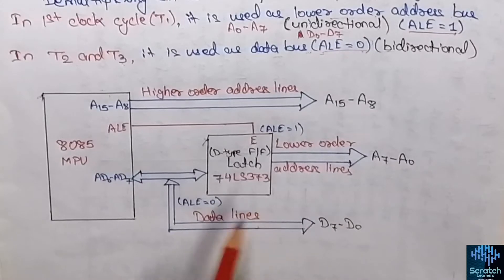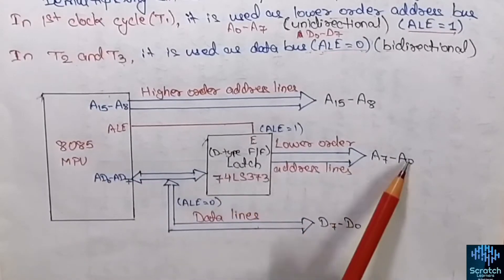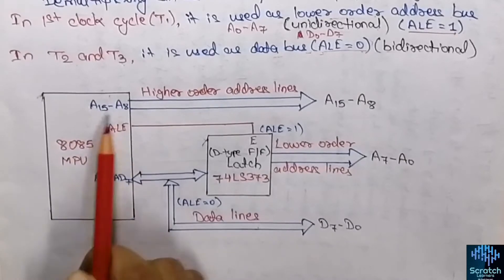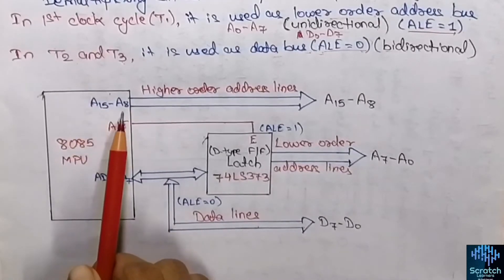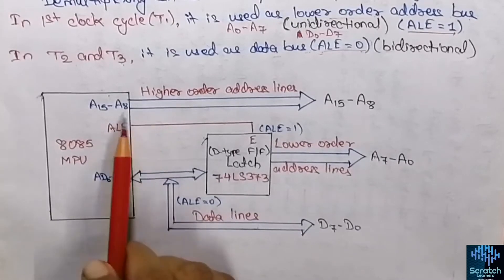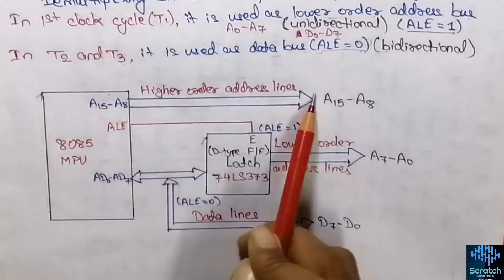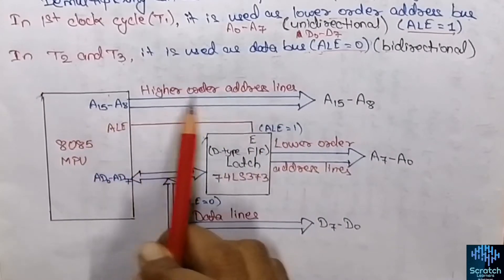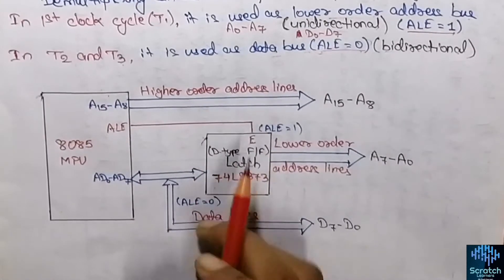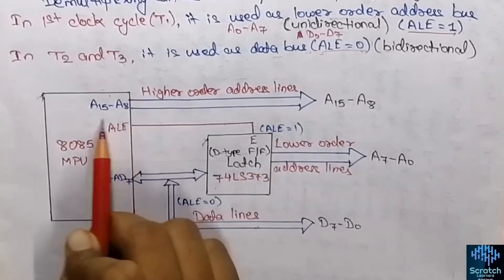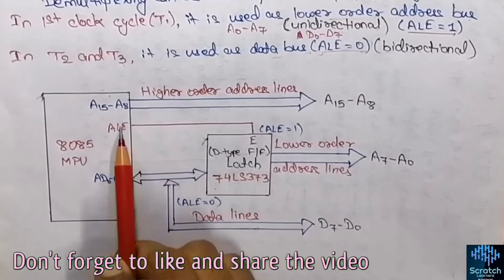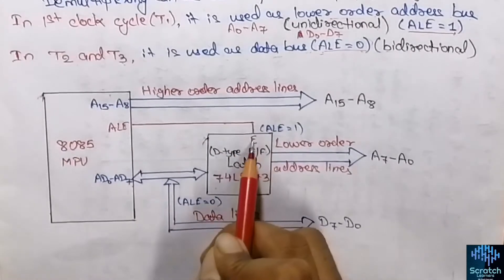Now look at this diagram — this is the hardware interfacing for demultiplexing the lower-order address bus and the data bus. Here you can see the 8085 microprocessor unit. The most significant address lines A15 to A8 are used directly since they are not multiplexed. The multiplexed AD0 to AD7 lines are connected to a D-type flip-flop latch. The ALE signal is connected to the enable line of this latch.